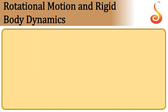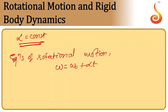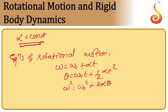The rotational kinetic energy is k = (1/2)Iω², which in terms of angular momentum is L²/(2I). For constant angular acceleration, the equations of rotational motion are: ω = ω₀ + αt; θ = ω₀t + (1/2)αt²; ω² = ω₀² + 2αθ; and θ_n = ω₀ + (α/2)(2n − 1), which is the angular displacement in the nth second.